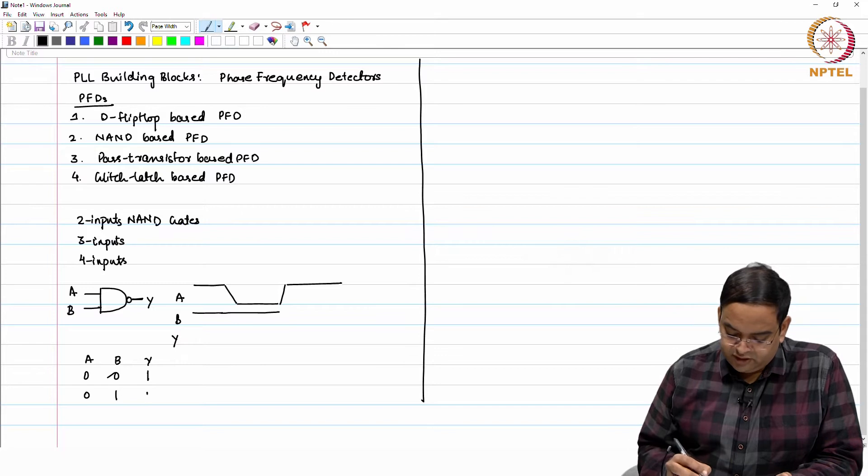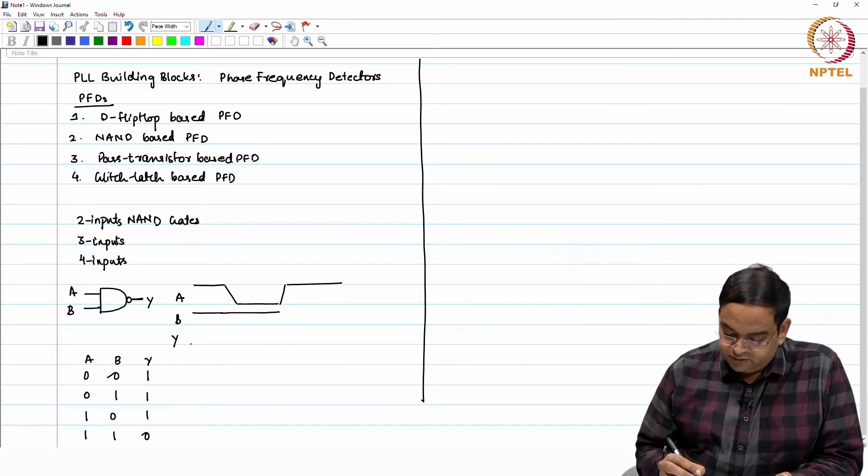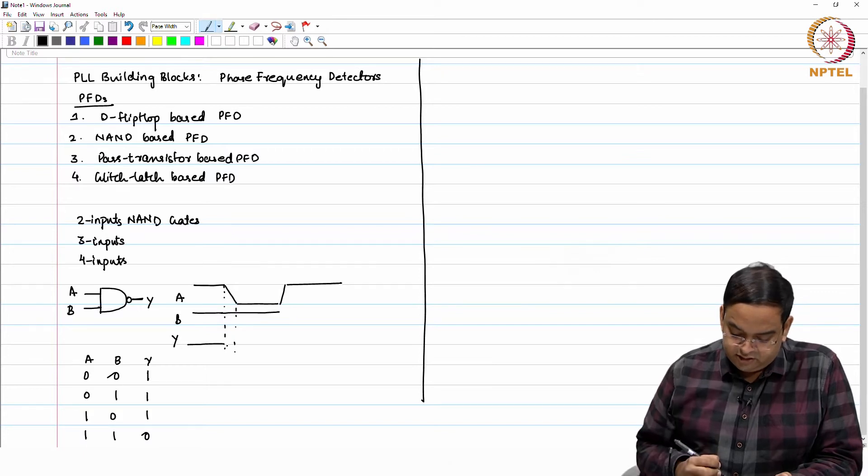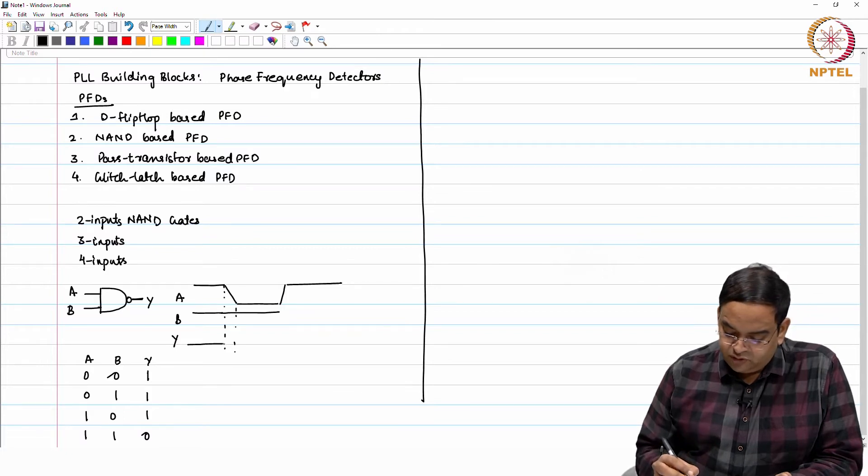When A is 0 and B is 0, this is 1. When A is 0, B is 1, then also it is 1. When A is 1, B is 0, then also this is 1. And when A and B both are 1, the output is 0.